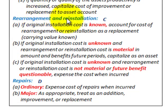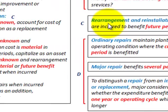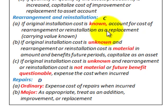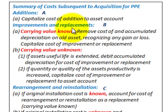Rearrangements and reinstallation costs are incurred to benefit future periods. For the accounting treatment: (A) if the original installation cost is known, account for the cost of the rearrangement or reinstallation as a replacement where the carrying value would be known, and follow those replacement rules.